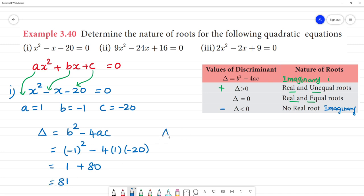So here delta equals 81 which is greater than 0. 81 is a positive number, it is greater than 0. So it has real and unequal roots.